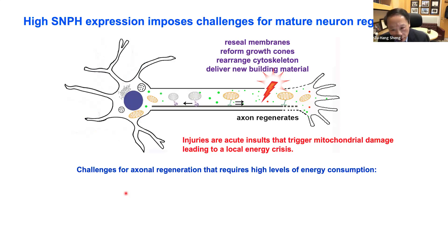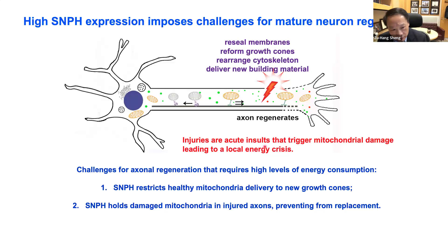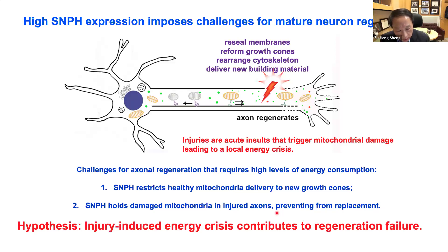Addressing this question is clinically relevant because high Syntaphilin expression poses large challenges for mature neuron regeneration after injury. Injury initiates regeneration programs including cytoskeletal events that all require high energy consumption. Injury is also an acute insult that triggers mitochondrial damage and leads to local energy crisis. In mature neurons, high Syntaphilin expression can restrict healthy mitochondrial delivery to new growth cones and hold damaged mitochondria in the injured axon, preventing replacement. We therefore propose an energy crisis model: injury induces an energy crisis that contributes to CNS regeneration failure.